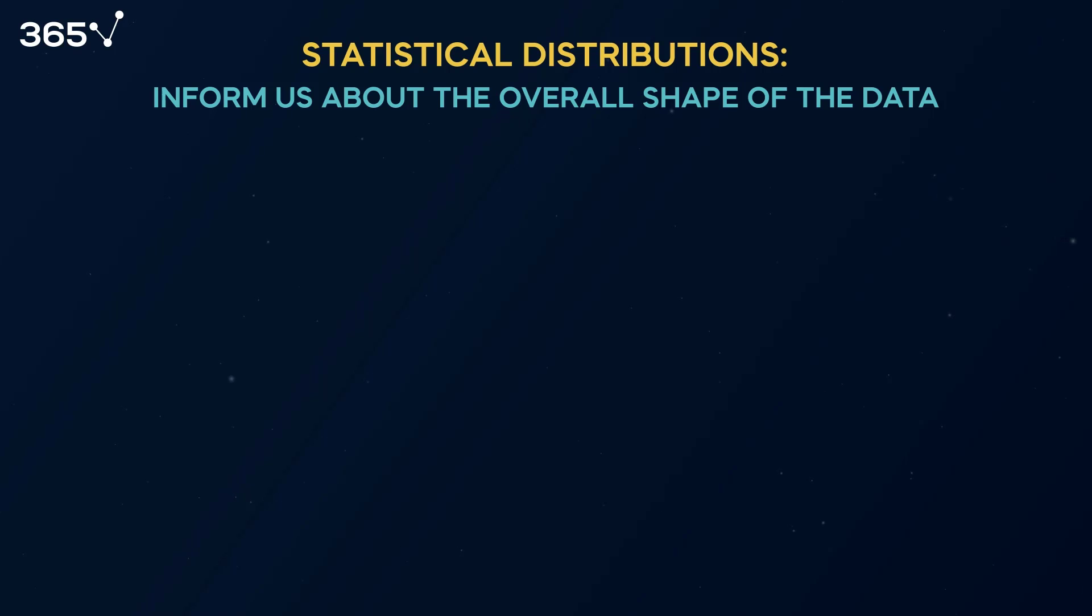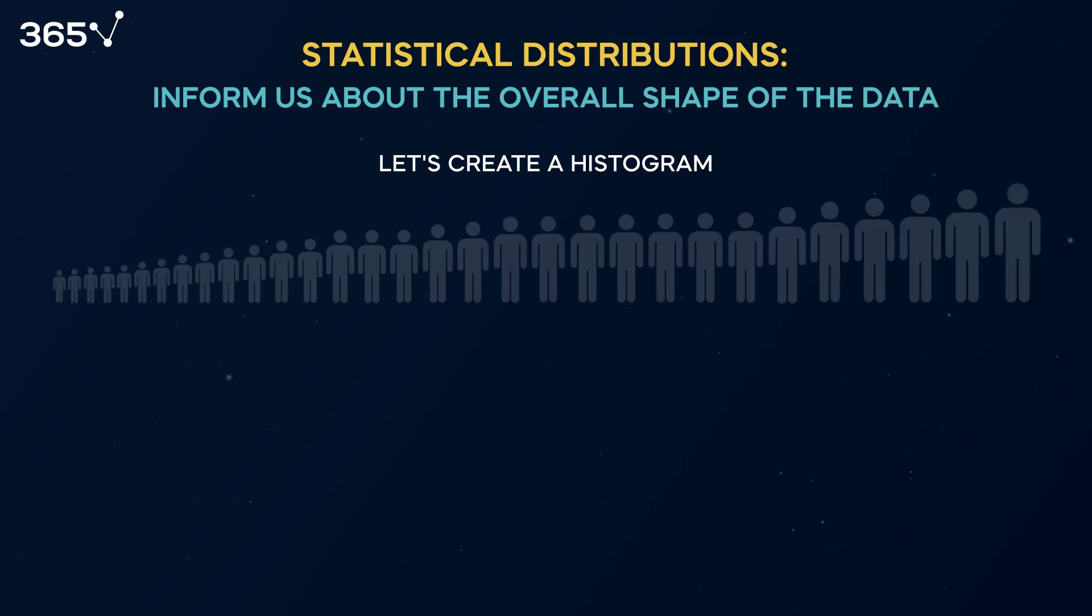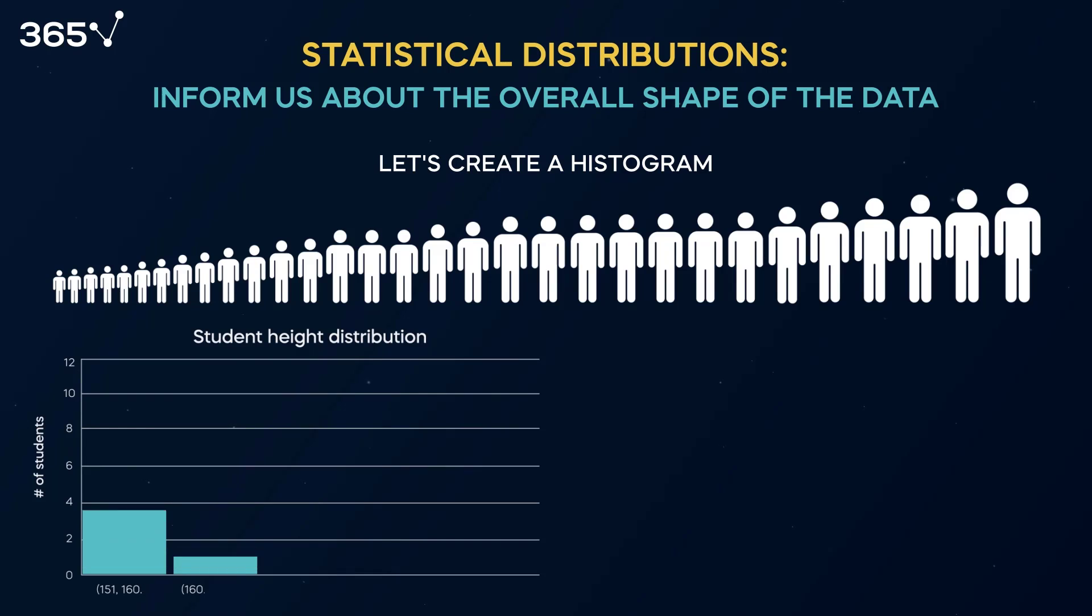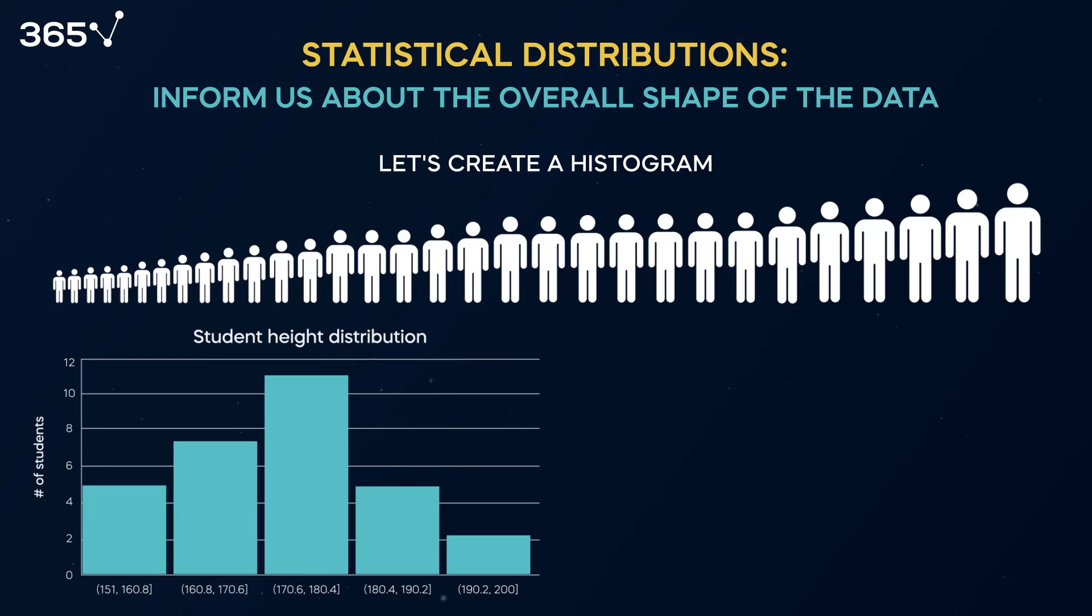When we study how the observations in a dataset are spread out, it makes sense to talk about distributions. These inform us about the overall shape of the data and show how frequently a value occurs in a dataset. Let's create a histogram, one of the most popular visualizations in statistics, using our students' heights. Our software organizes the dataset in bins and intervals, heights in our case. If we use five intervals, Excel will count how many tall people there are between 151 and 160.8 centimeters, then how many are between 160.8 to 170.6, etc.